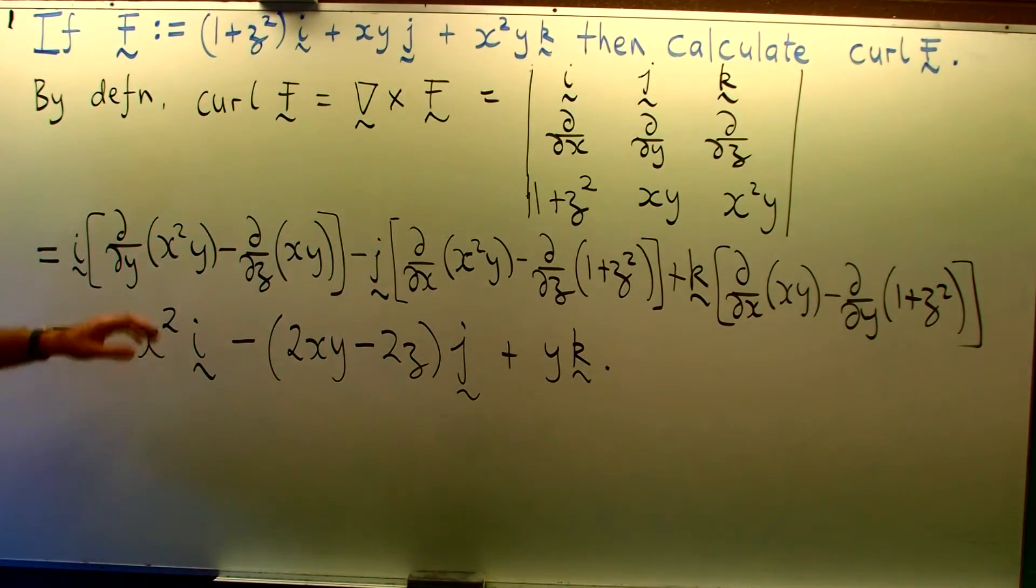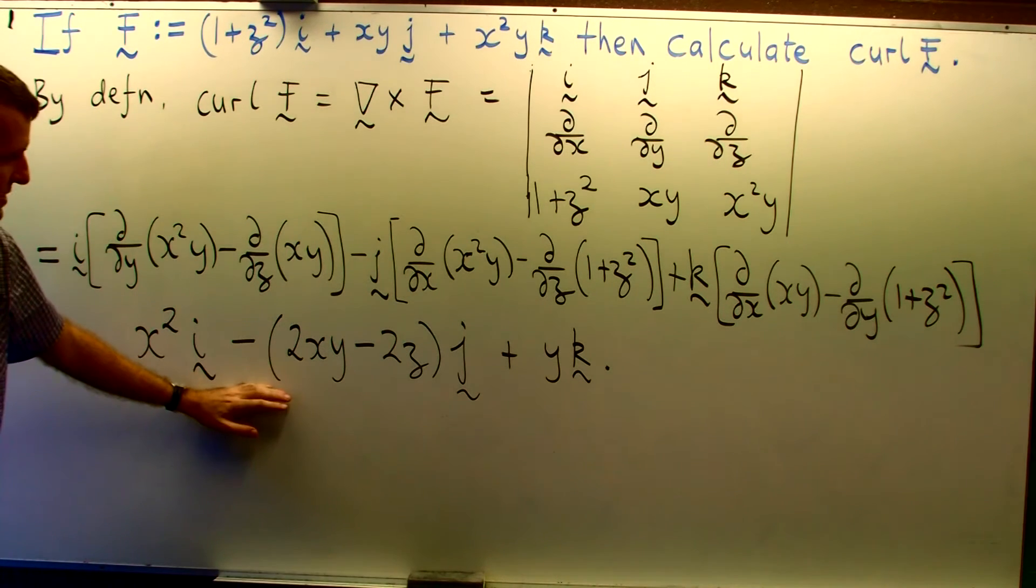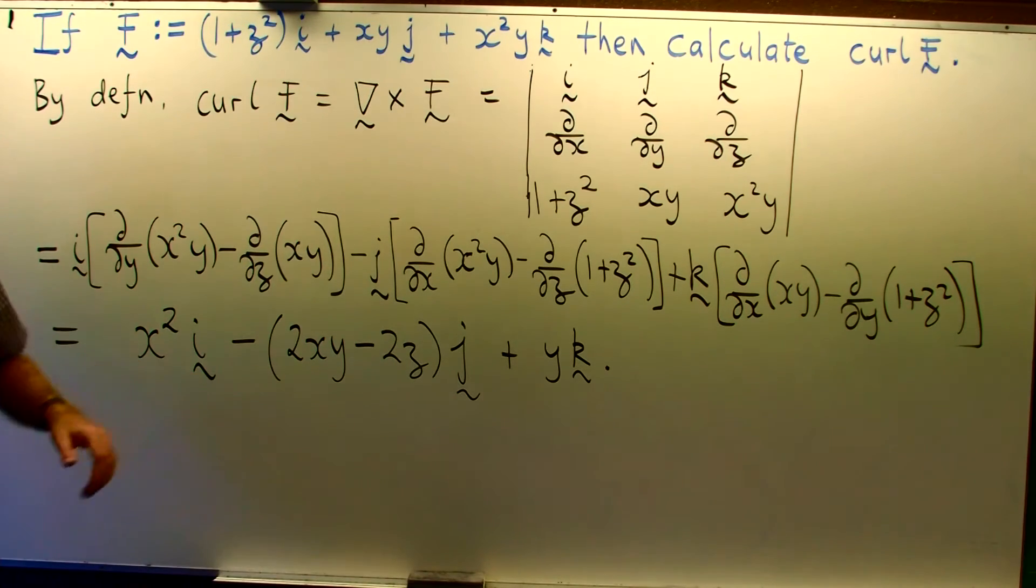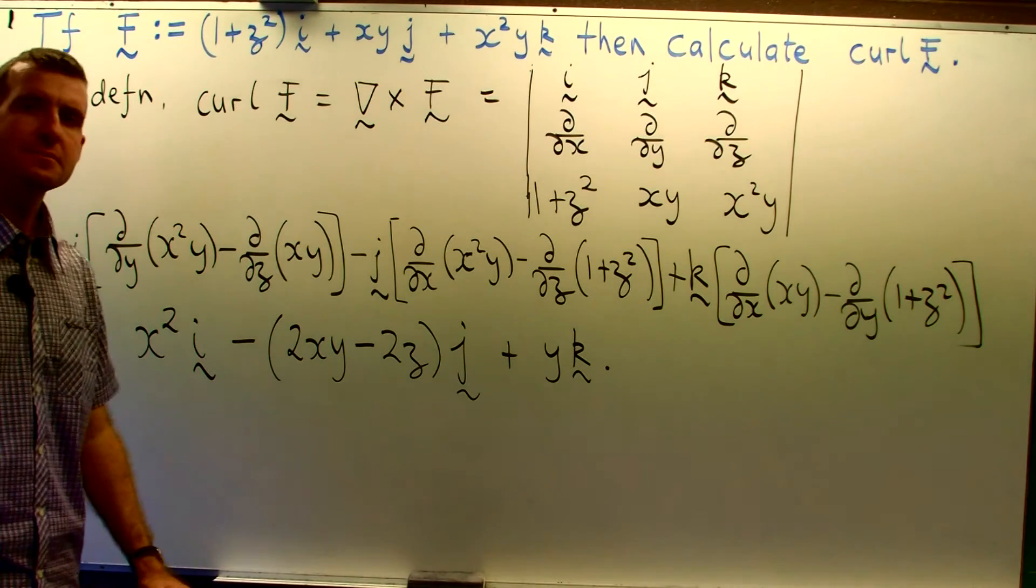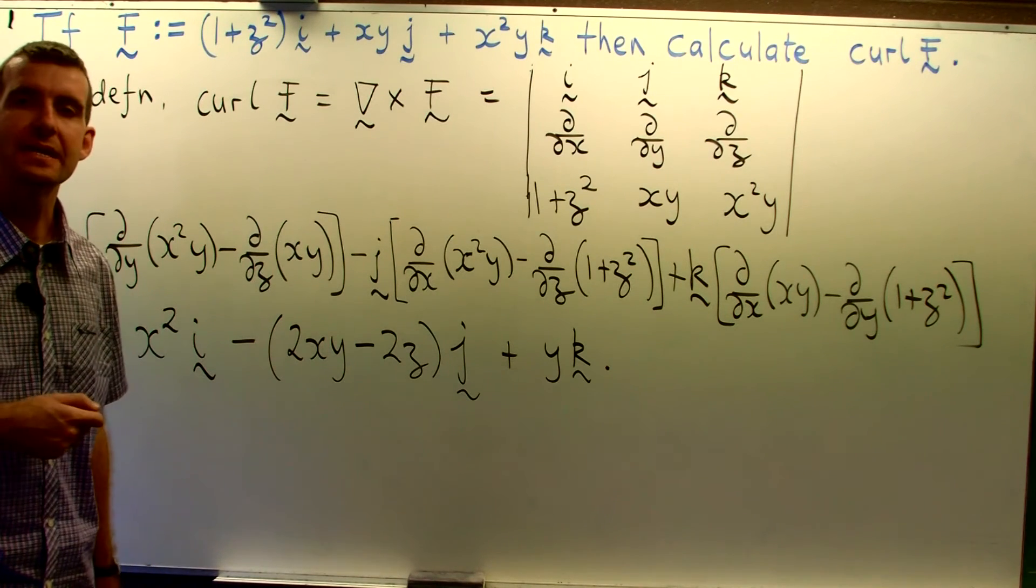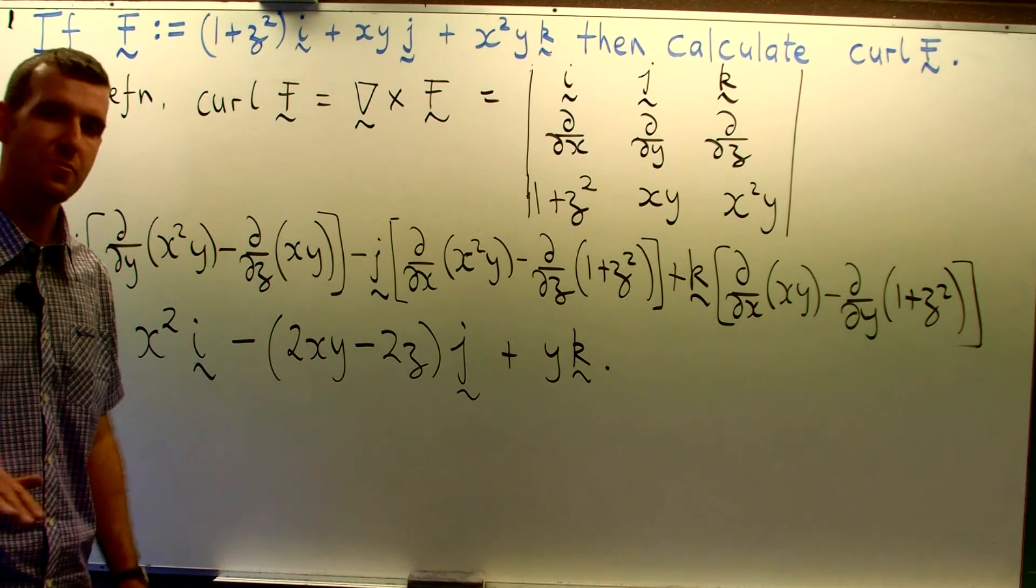Now note that the curl is also a vector field. Okay and loosely speaking the curl evaluated at a point it measures the tendency of the vector field to swirl around that point.